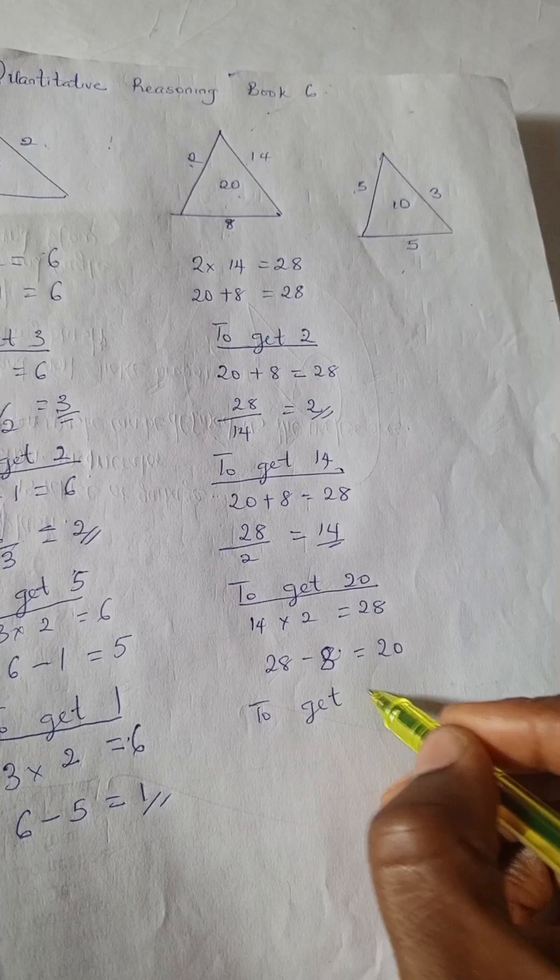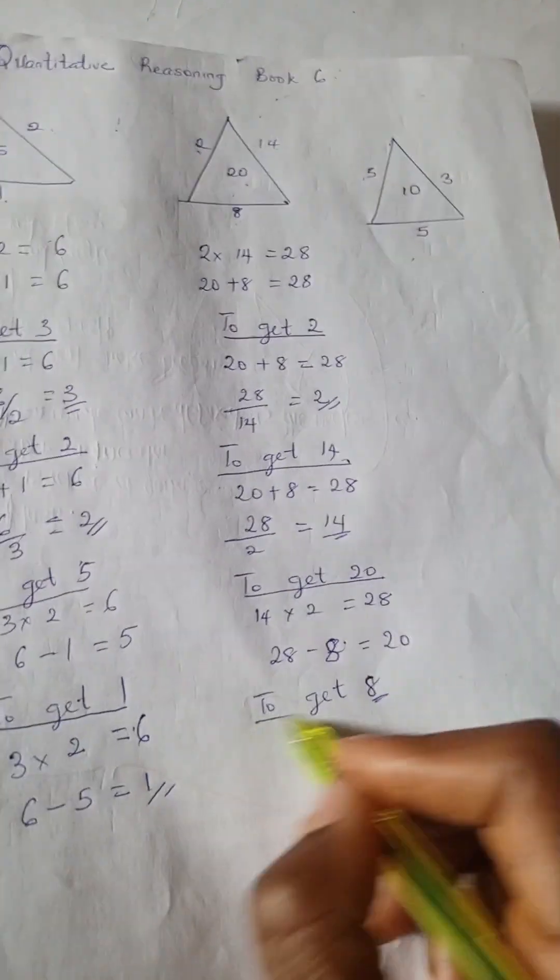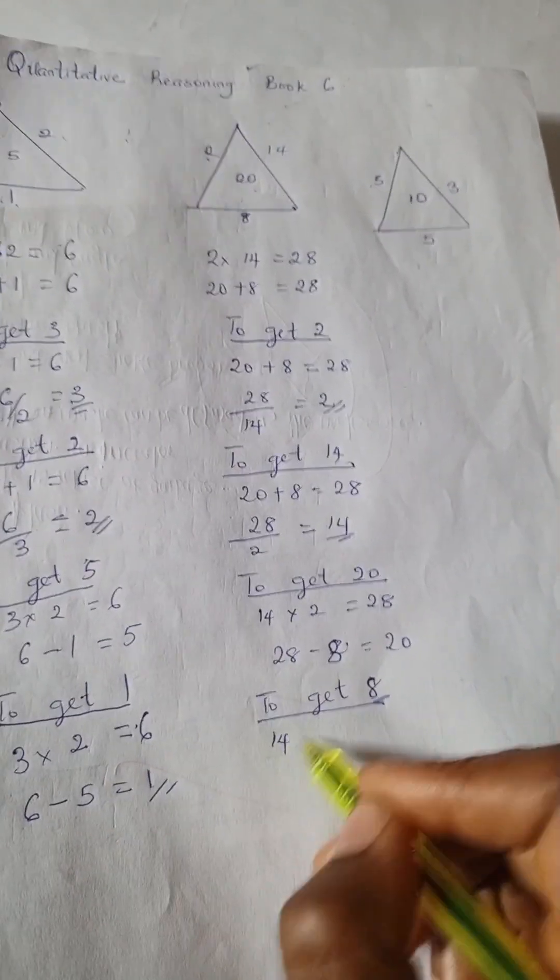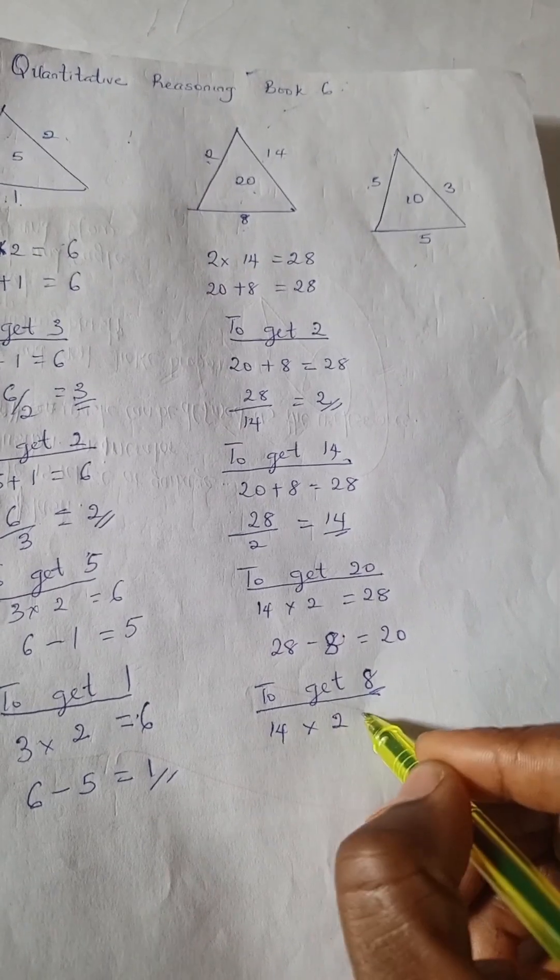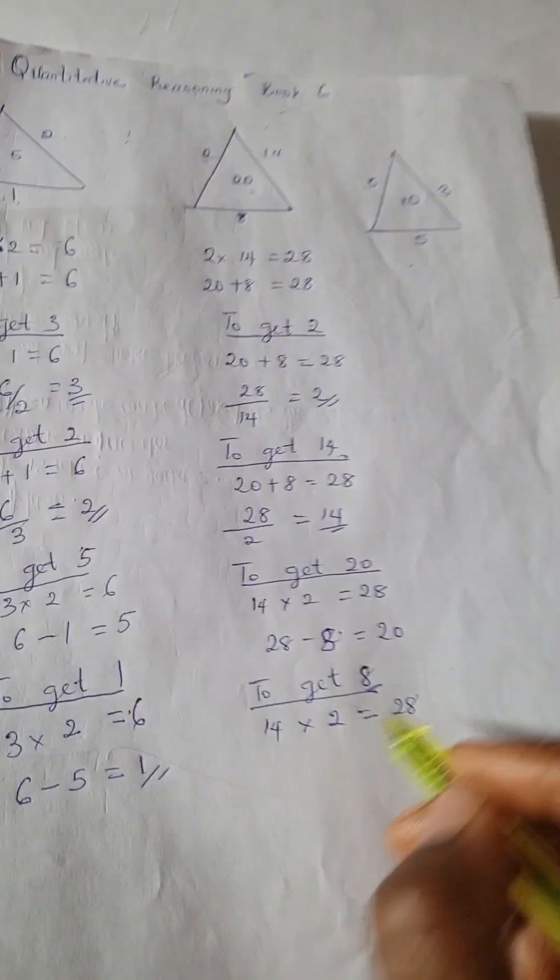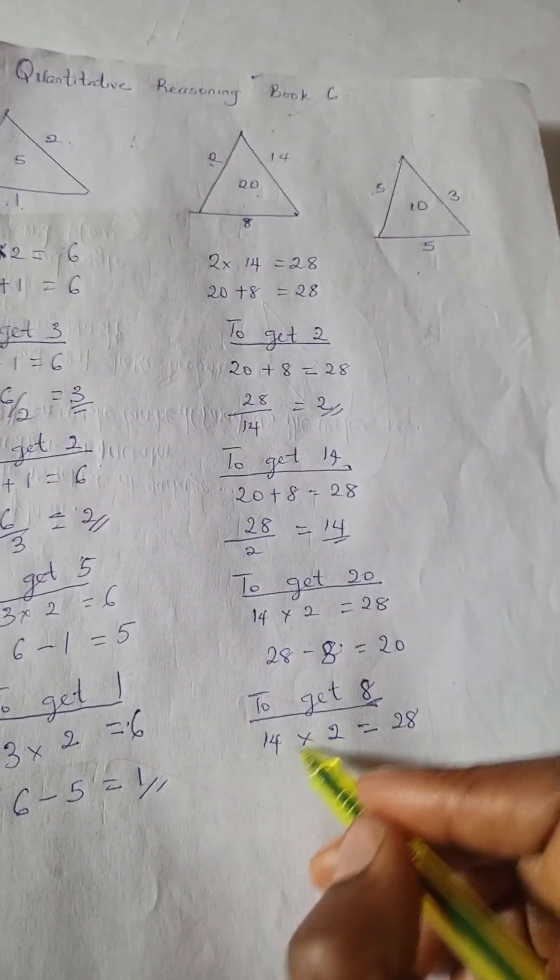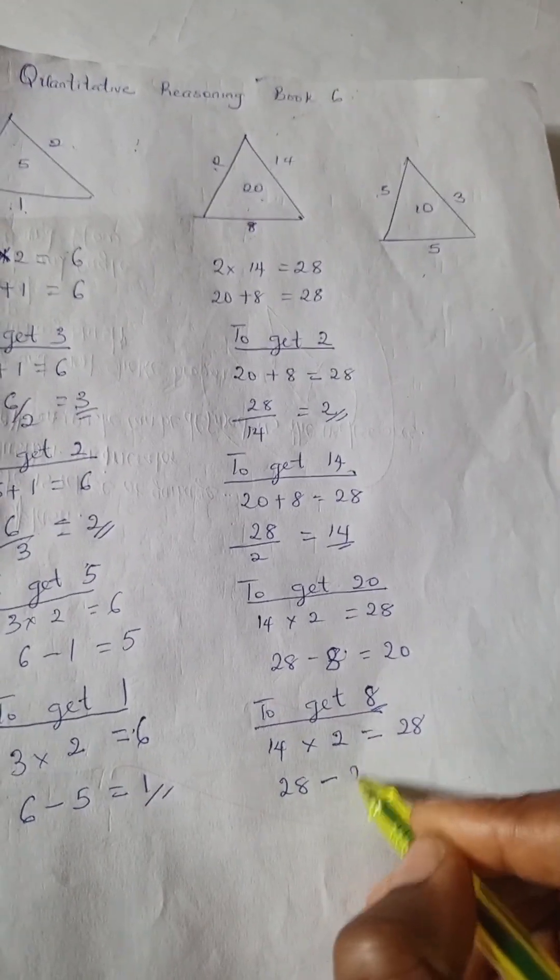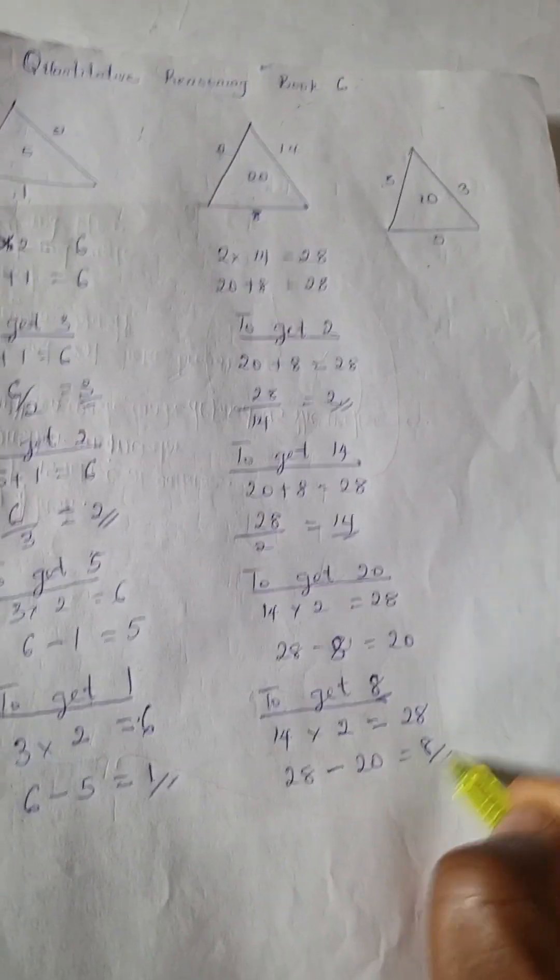To get 8, the last number, we have 14 times 2 is 28, and 28 minus 20 is 8.